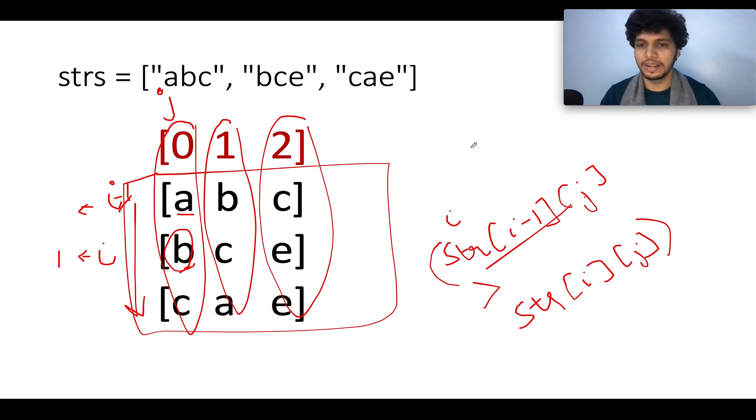And we will be creating a global variable. We will say that whenever such a condition is met, that corresponding column is lexographically unsorted and we will increment the counter. So we can say delete count, kind of a variable we can keep. By default it is initialized to zero.